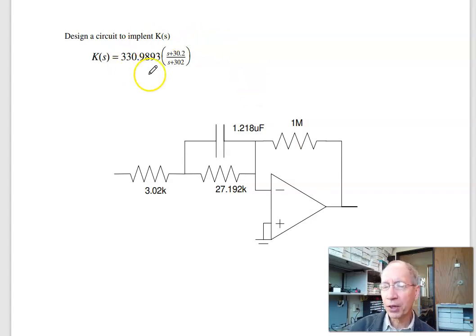In that case, I've got three constraints, 4 degrees of freedom. What I like doing is pick one of them. Like, let's make this 1 meg. As s goes to infinity, this is a short. As s goes to infinity, the gain is 330. So 1 over rc is 330. Solve for r. r is 302k.